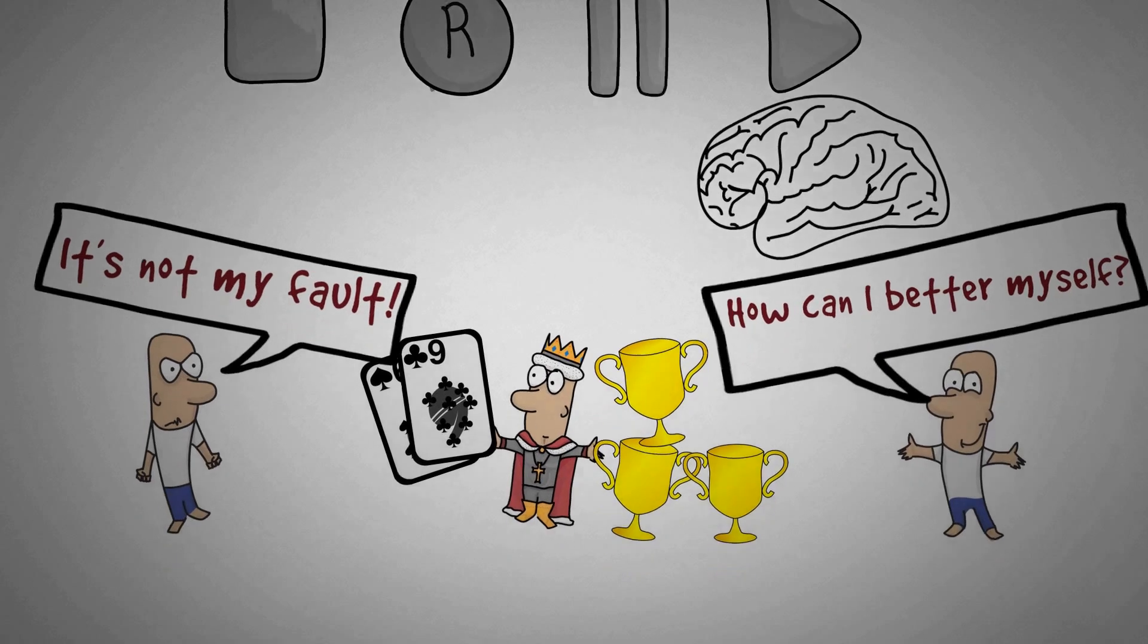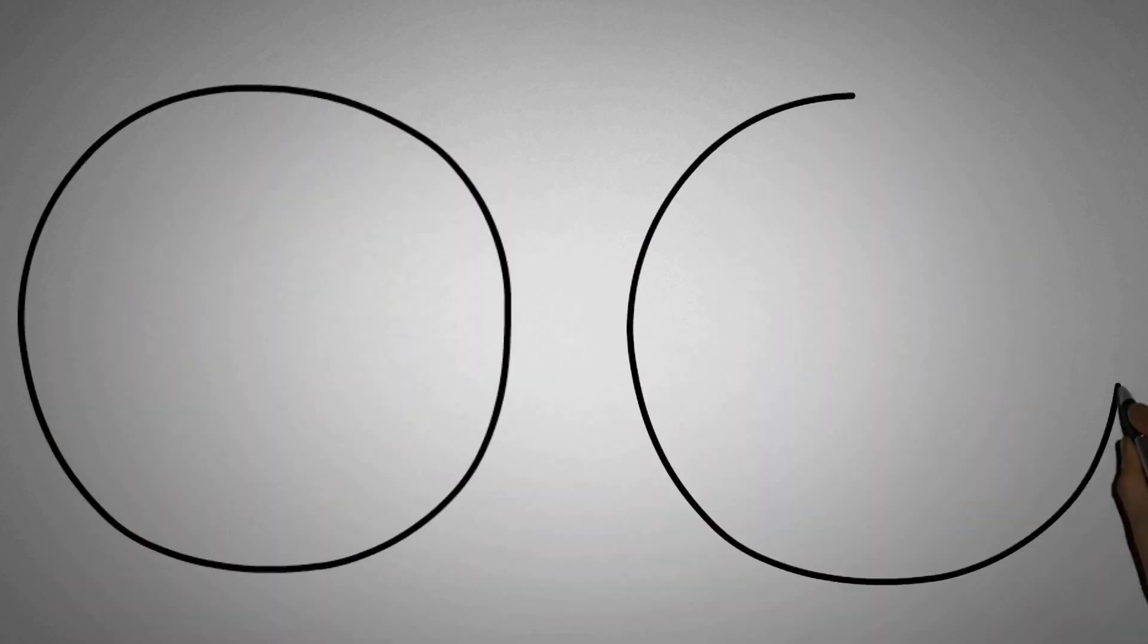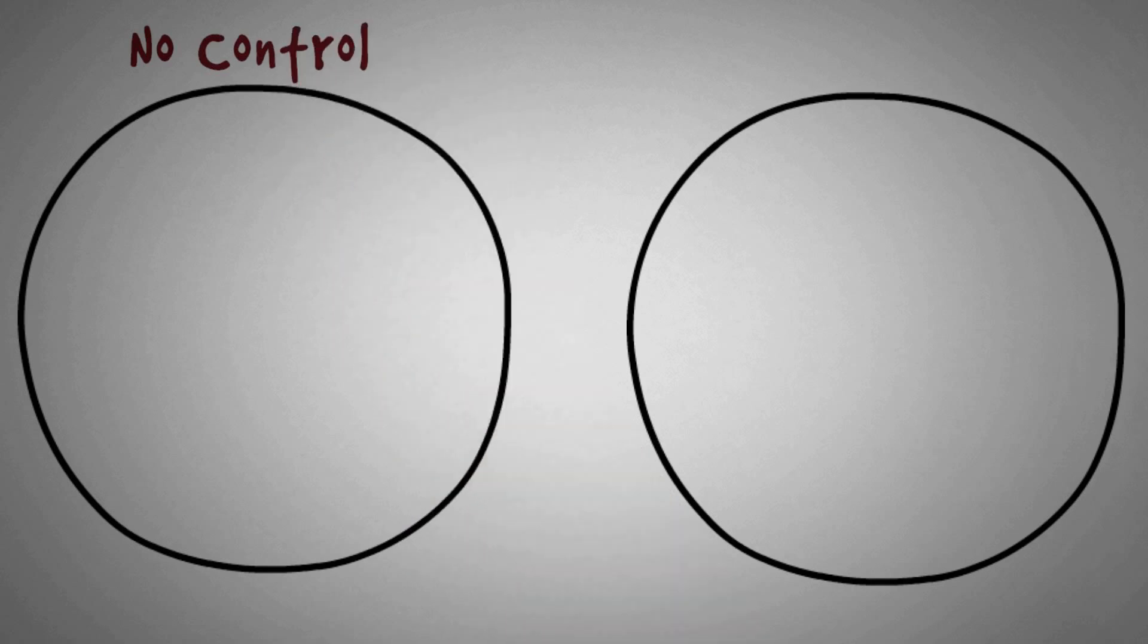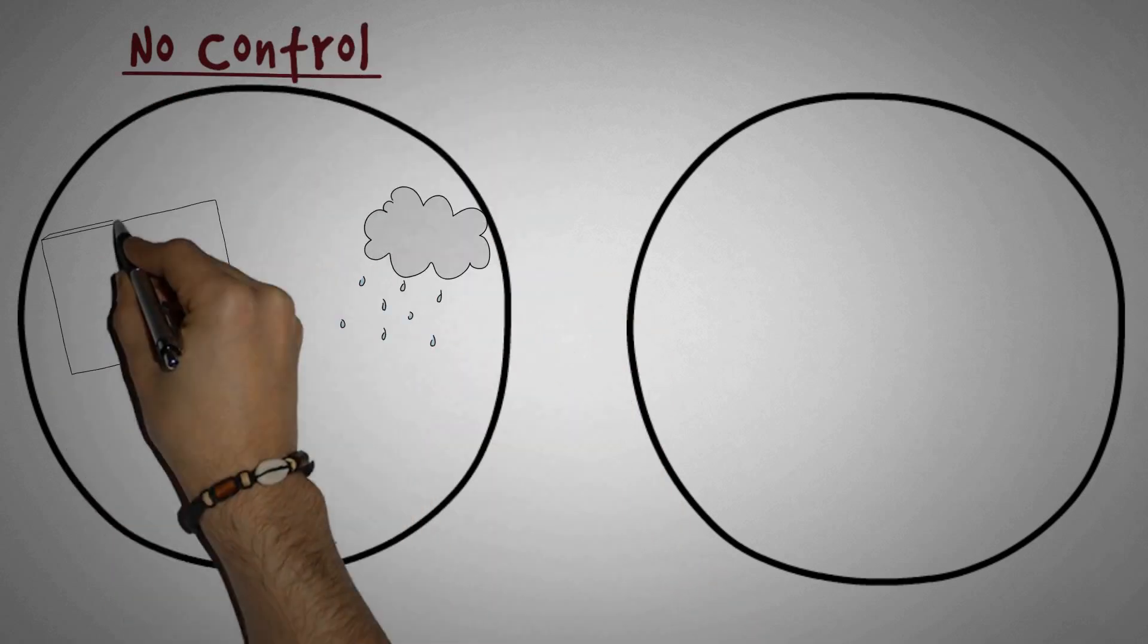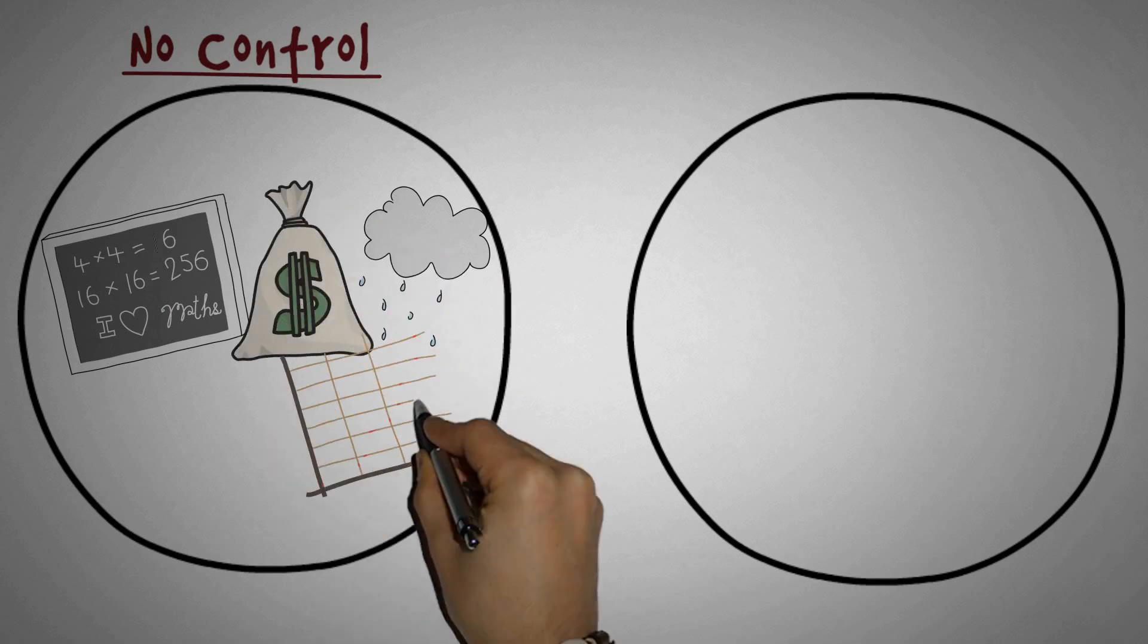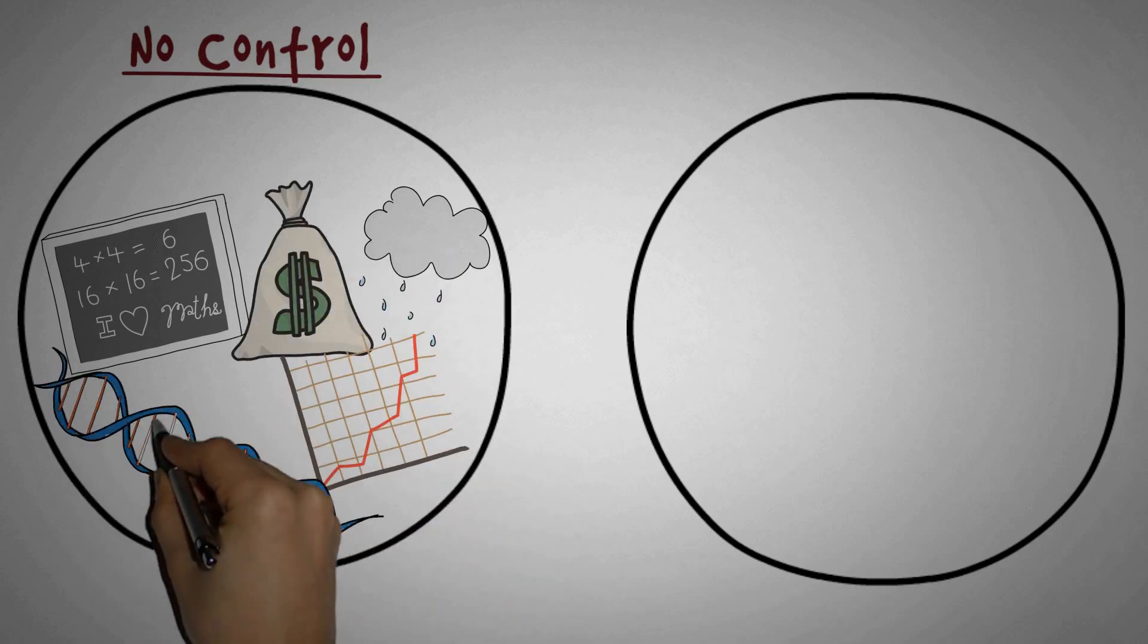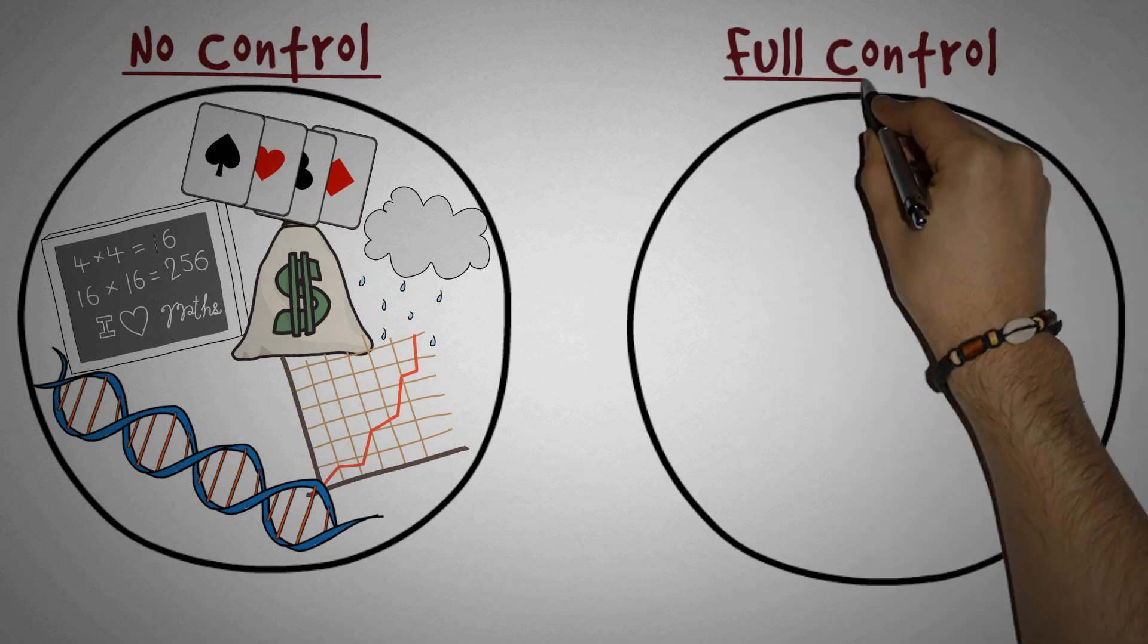So how do you become proactive? First, you have to understand that there are two areas. Over the first one, you have no control whatsoever. This is stuff like the weather, your teacher's teaching style, the wealth of your parents, the economy, or your genetics. Think of this circle as the cards that you got from life. And then there is the second circle—you have full control over it.